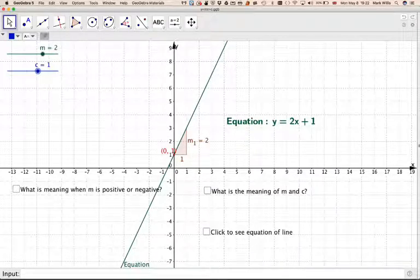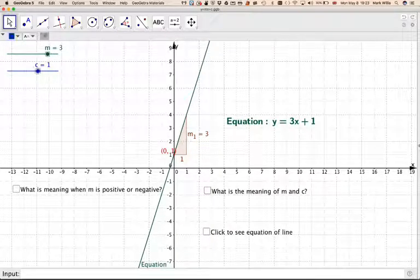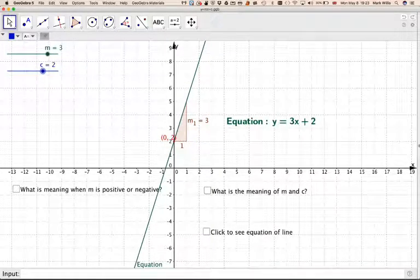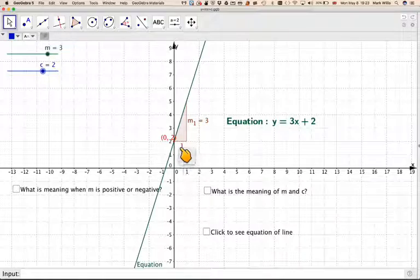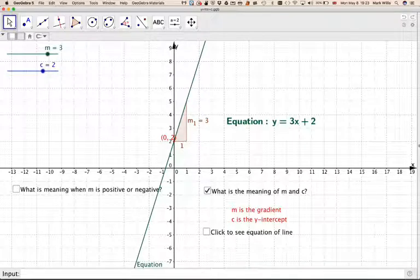Let's just try another one. Let's make m 3 and make c 2. So this is the line y is equal to 3x plus 2. And so what we've got for every 1 square along, we go up 3. So the number in front of x stands for the gradient. And the number that we add on is the y-intercept. So what is the meaning of m and c? m is the gradient and c is the y-intercept.